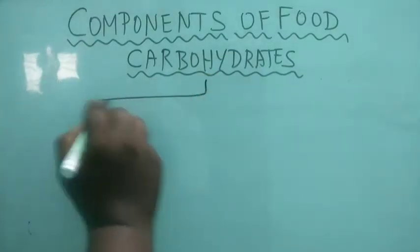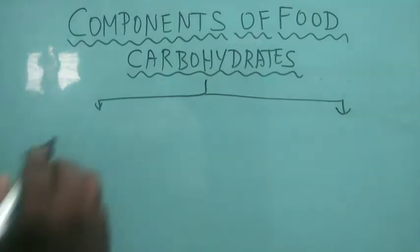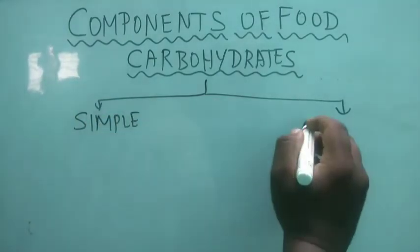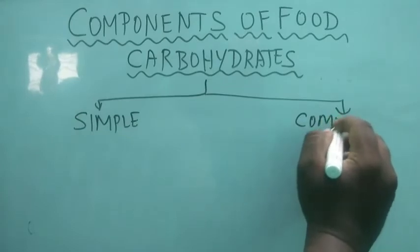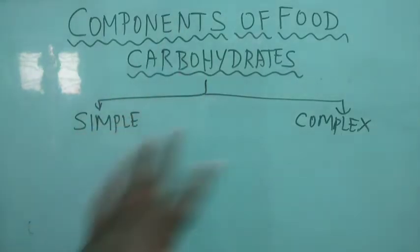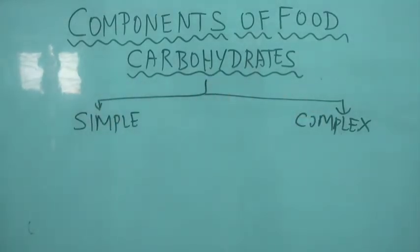Based on the presence of sugars, carbohydrates are sorted into two categories: one is called simple carbohydrate and another one is called complex carbohydrate.